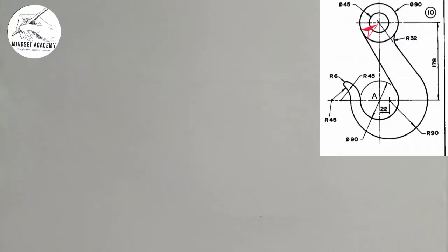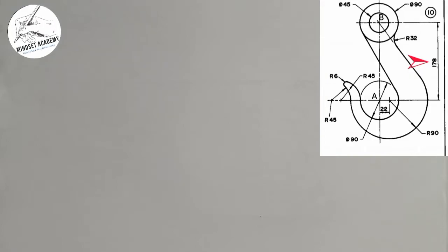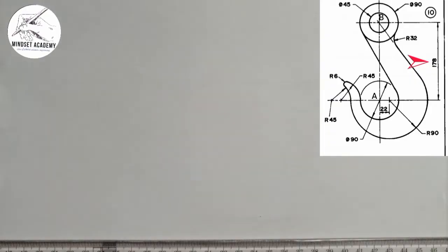The distance between the two centers is given to be 178, but we should use half the dimension, so I'm going to divide 178 by 2 and that will give me 89.